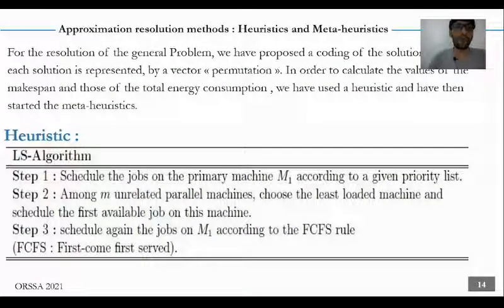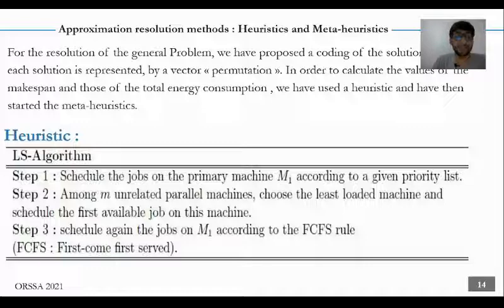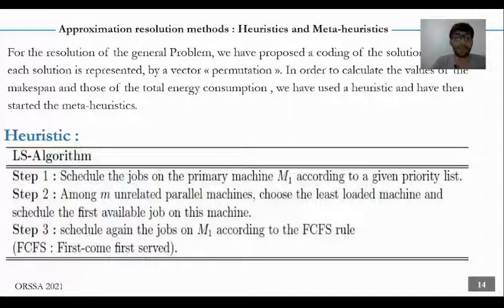On this slide, we present the approximation resolution method. For the resolution of the general problem, we have proposed a coding of the solutions, where each solution is represented by a permutation vector. In order to calculate the values of the makespan and the total energy consumption, we have used a heuristic and then started the meta-heuristics. We present here the LS algorithm. Step one: we schedule the jobs on the primary machine M1 according to a given priority list. Step two: among M unrelated parallel machines, we choose the least loaded machine and schedule the first available job on it. Finally, we schedule the job again on M1 according to the FCFS rule, first-come first-serve.